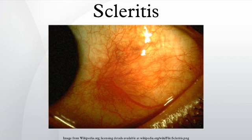Most of the time, scleritis is not caused by an infectious agent. Histopathological changes are that of a chronic granulomatous disorder, characterized by fibrinoid necrosis, infiltration by polymorphonuclear cells, lymphocytes, plasma cells, and macrophages. The granuloma is surrounded by multinucleated epithelioid giant cells and new vessels, some of which may show evidence of vasculitis.